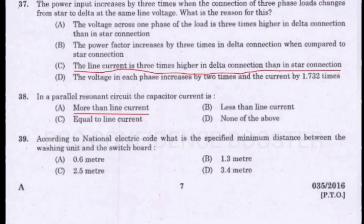Question number 39. According to National Electric Code, what is the specified minimum distance between the washing unit and the switchboard? Option A - 0.6 meter.